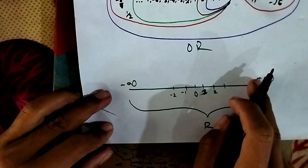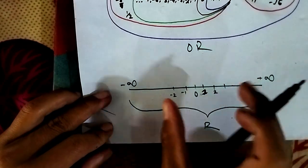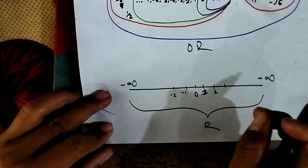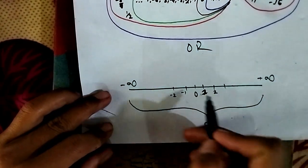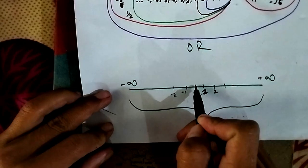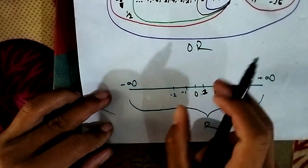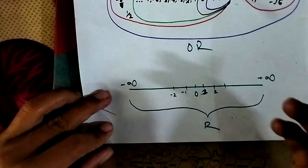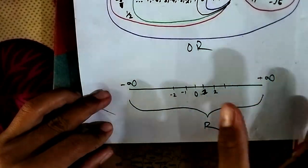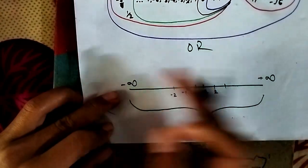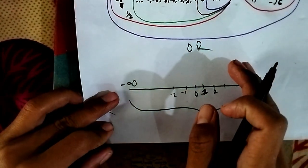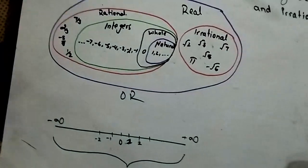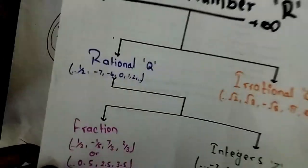Minus infinity to infinity is a number line. Every number on that infinite line is a real number. The line itself represents the real numbers.